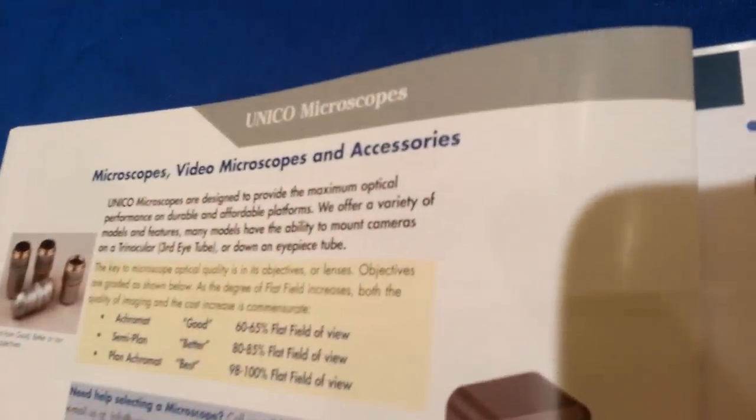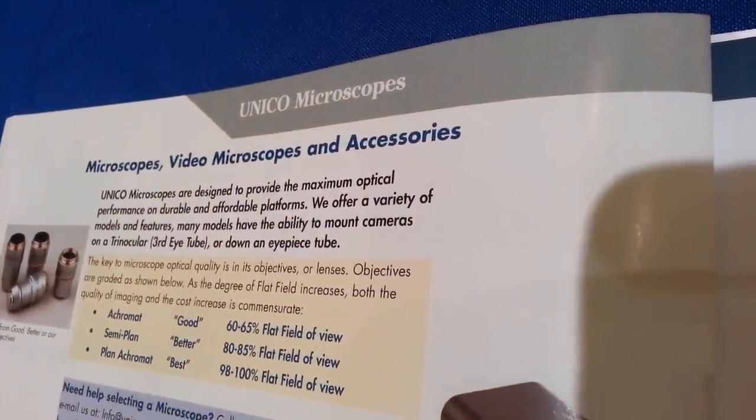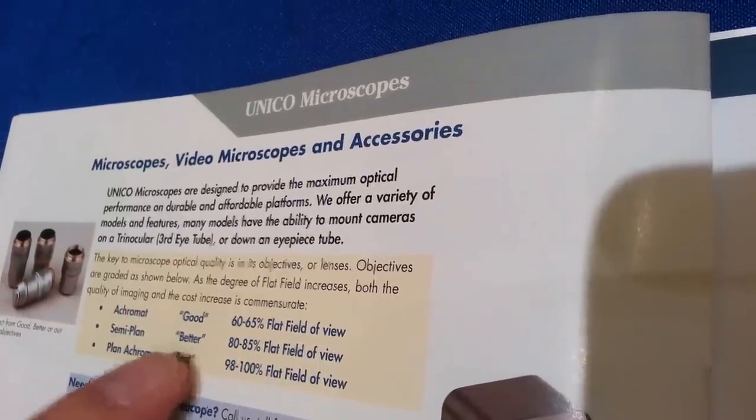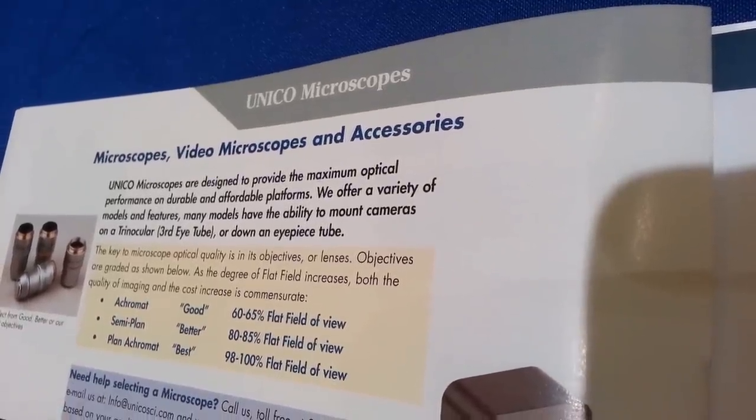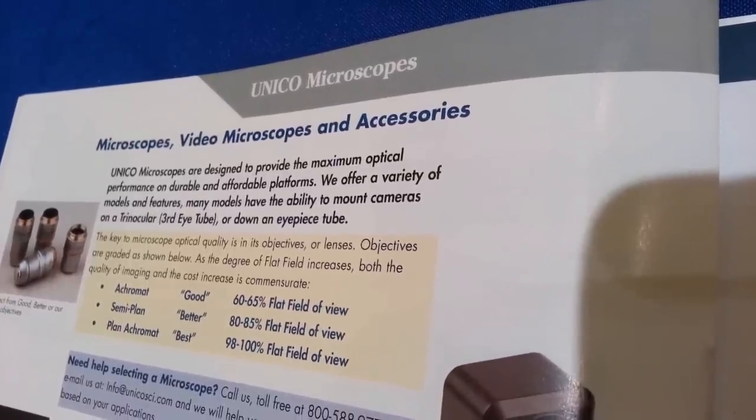But if we take a look down here, the Acromats have 60 to 65 percent of the field of view crisp and clear and in focus. With the semi-plan about 85 percent and with plan Acromat just about a hundred percent will be crisp and clear and in focus.